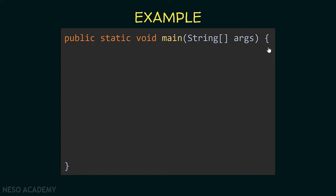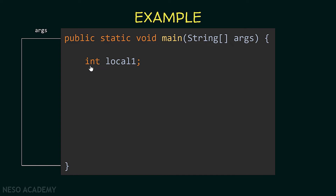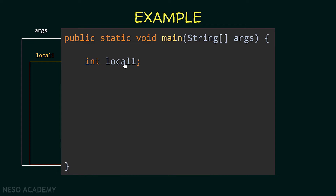So the scope of the args variable starts from the opening brace and ends at the closing brace. Now suppose that we declare another variable, int local1. What is the scope of this variable? It starts where we declare the variable and ends at the end of the block of the main method. So its scope starts from its declaration and ends with the end of the block that contains the variable. This variable can be used starting from that point until the end of the method.